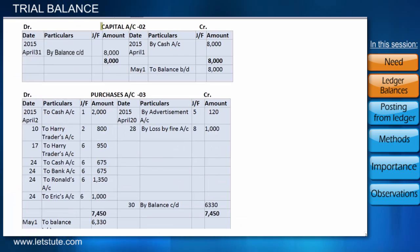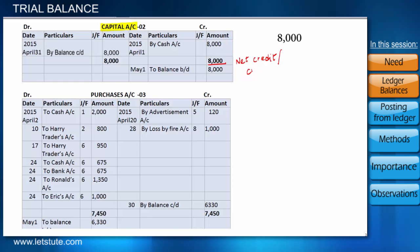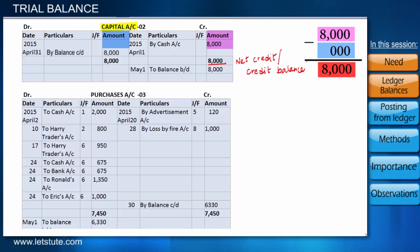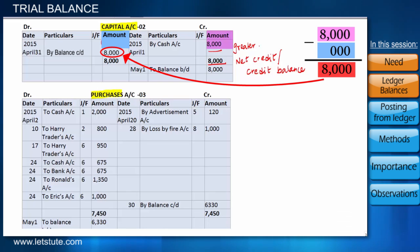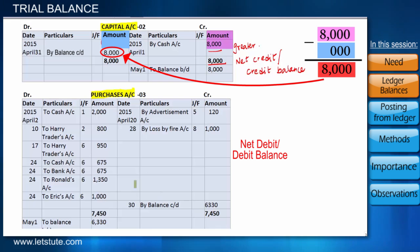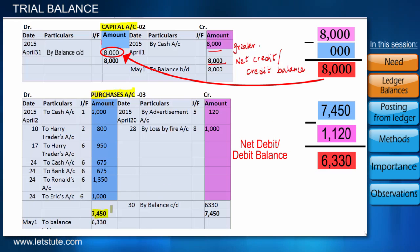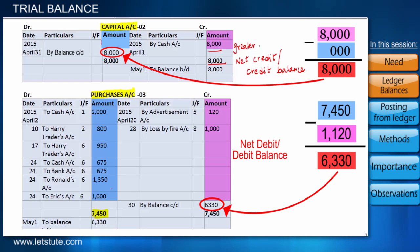The next account is the capital account, which has a net credit balance of 8,000 as the credit side total is greater. Now, looking at the purchases account — does it show a net debit or a net credit? It shows a net debit because the debit side total is greater, by 6,330.